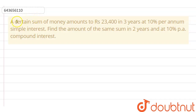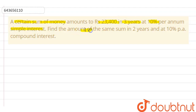Here the question is: a certain sum of money amounts to rupees 23,400 in three years at 10% per annum simple interest. Find the amount of the same sum in two years at 10% per annum compound interest.